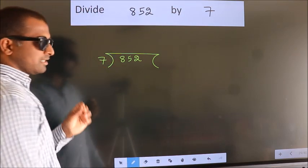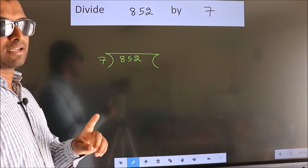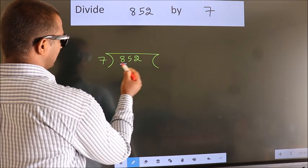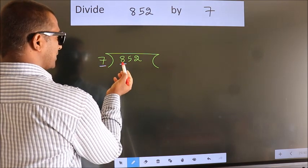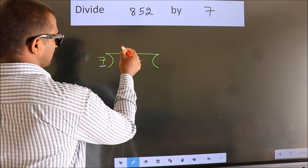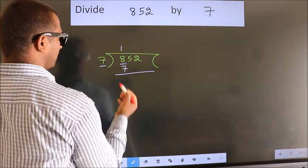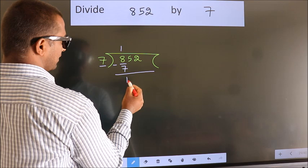This is your step 1. Next, here we have 8, here 7. A number close to 8 in 7 table is 7 once 7. Now, we should subtract. We get 1.